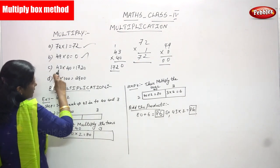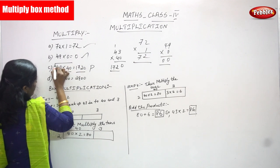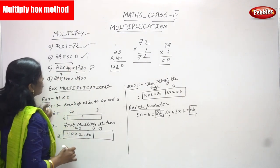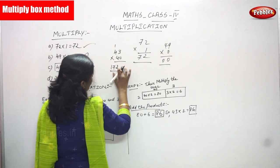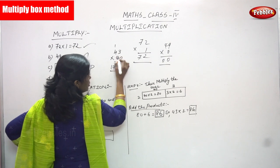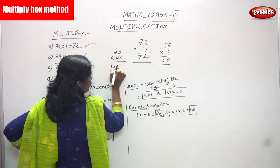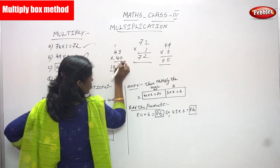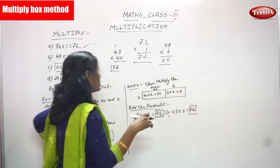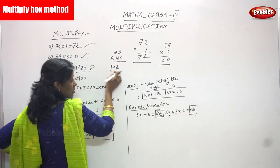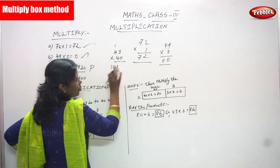So 43 into 40. These two are factors and this is the product. To solve 43 into 40, first you multiply only the non-zero numbers, then you add the 0 at the end. Don't consider the 0 during multiplication — finally you add the 0. Since there is only one 0 here, you multiply 43 into 4, then add one 0 at the last.